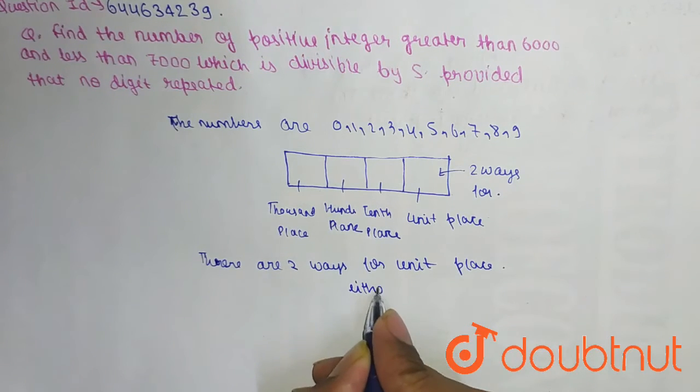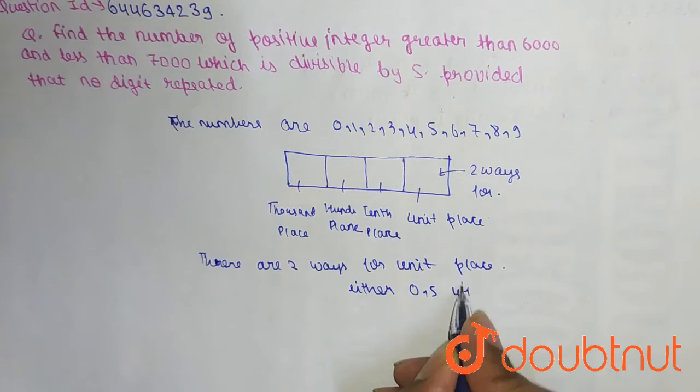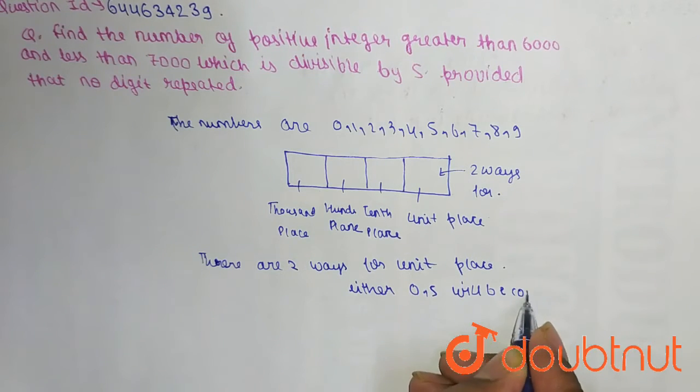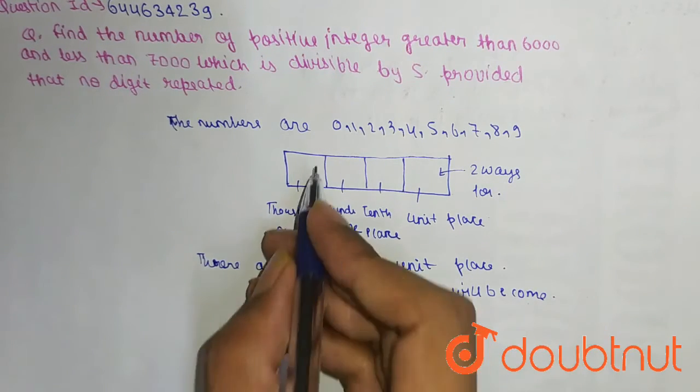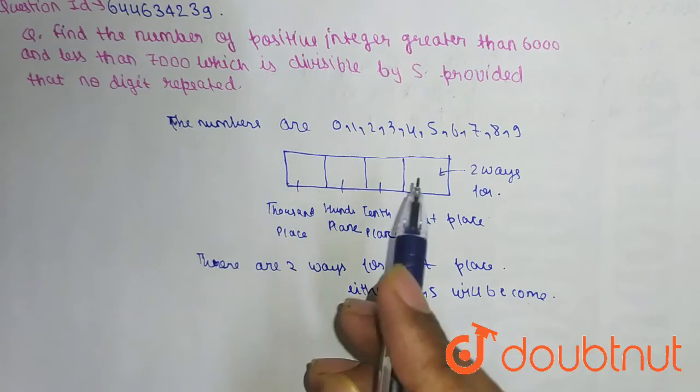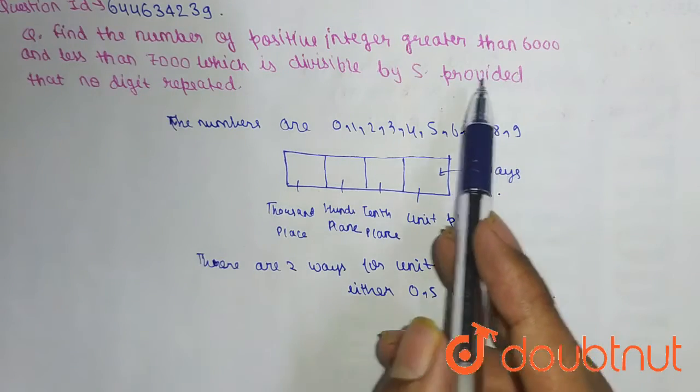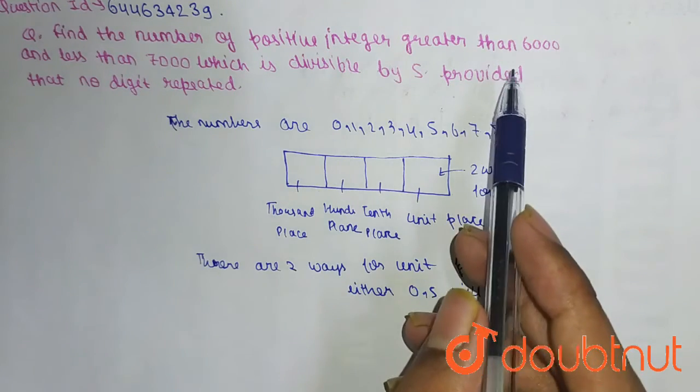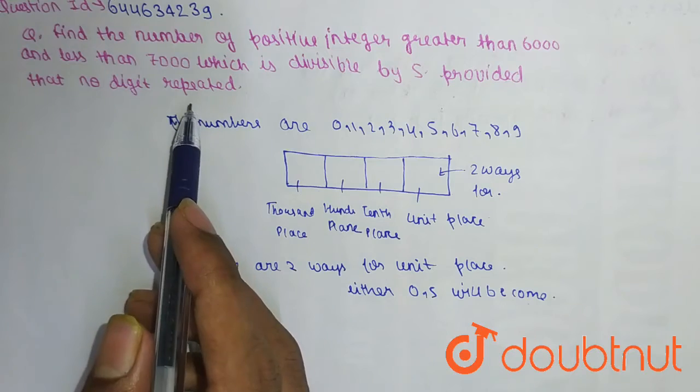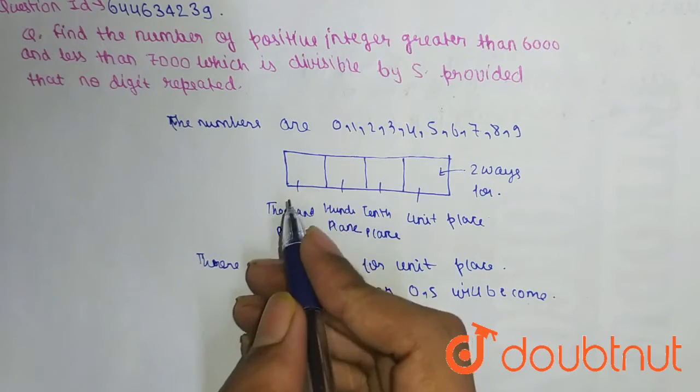Now at the thousandth place, we have clearly given that the number is greater than 6000 but less than 7000. This means that at the thousand place, the number is equal to 6.